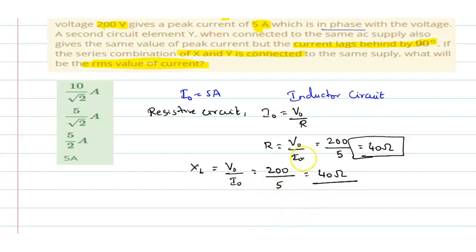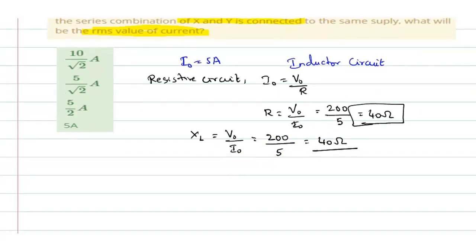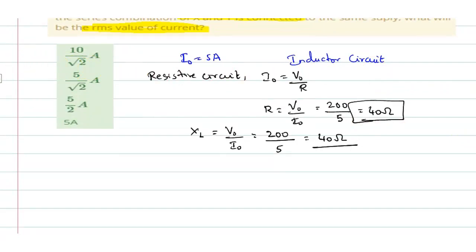Now let us go with the series combination. When an inductor and resistor are connected in series, we shall write the impedance Z. Z is the impedance and it is given by root of R square plus XL square. So Z will be equal to root of R is 40 square plus XL square is also 40 square. So this you will get as 40 into root 2. And since it is impedance, it is a type of resistance, it is 40 root 2 ohms.